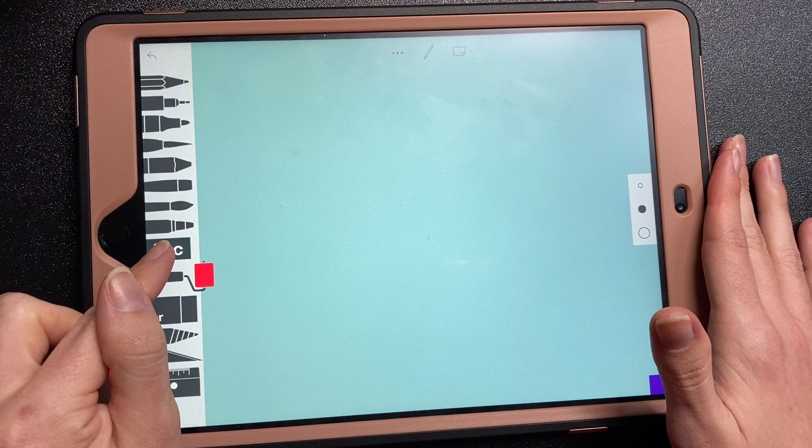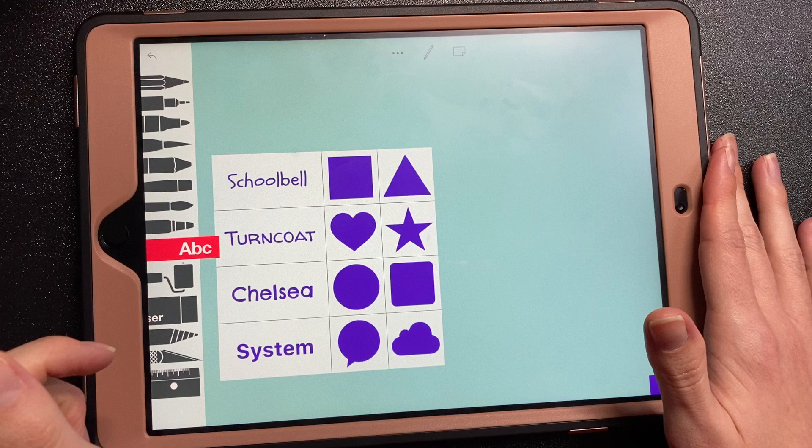Now the next thing we're going to do is add our characters. To do that, I'm going to tap on the ABC, and I am going to select the square.